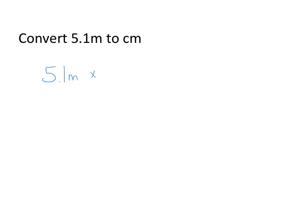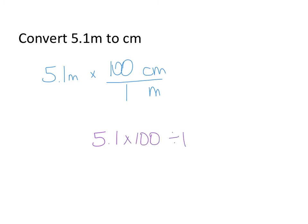Here's a simple example. If we're going to convert 5.1 meters to centimeters, the units I want to get rid of are meters, and the units I want to keep are centimeters. We look at our formula sheet, or rely on our understanding of the metric system, to fill in that 100 centimeters means the same thing as one meter. On our calculators, we type 5.1 multiplied by 100, dividing by 1, and we find that this equals 510 centimeters.